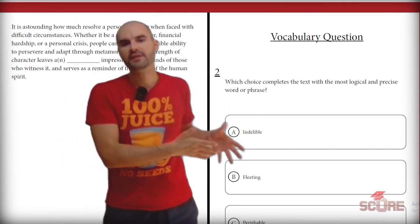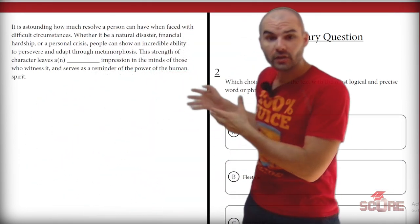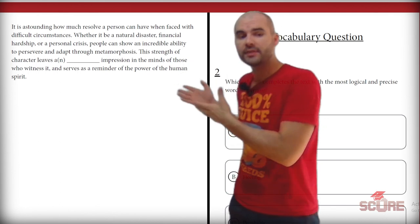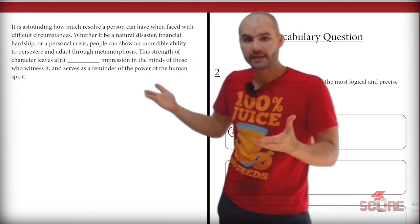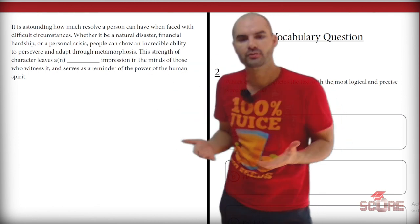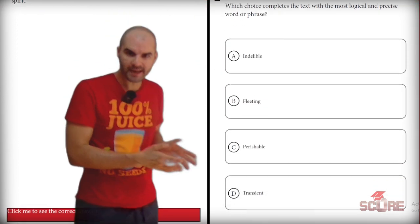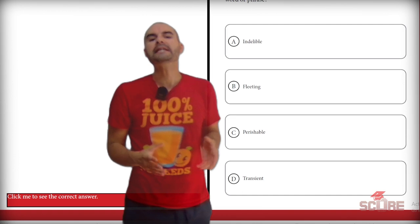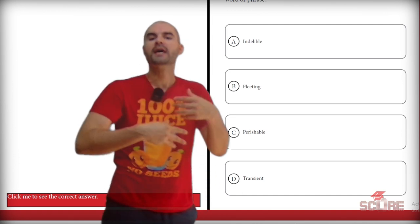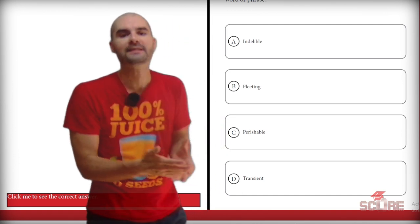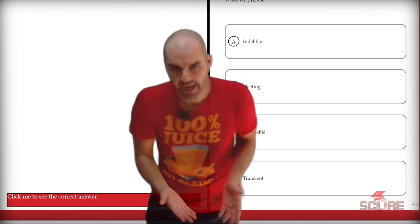Number two, I look at my question. Again, I see that it's a vocabulary question. So I take a look at the blank here and it says the strength of character leaves a blank impression in the minds of those who witness it. We've got indelible, fleeting, perishable, and transient. Now this one's really easy because I can see that three words have something in common, and that means that the fourth word is going to be the right answer.